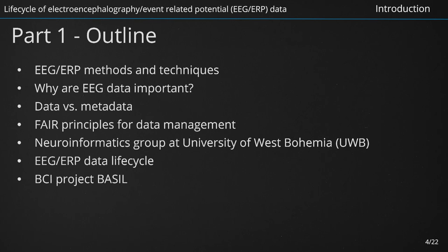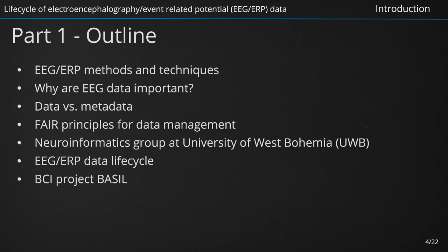Let's now concentrate on the first part of our tutorial. At first, we shortly introduce the methods and techniques of EEG and ERP. Then we will focus on data — why it is important to take care of data, what is the difference between data and metadata, and what FAIR principles for data management mean. After that, we shortly introduce the Neuroinformatics Research Group at the University of West Bohemia that has prepared this tutorial, and will continue with the core of our tutorial, EEG and ERP data life cycle. This part is concluded with the introductory presentation of the brain-computer interface, BCI, project PUZZLE and a short quiz.